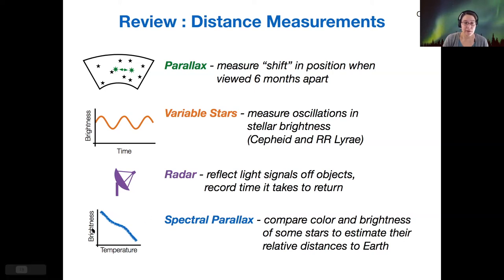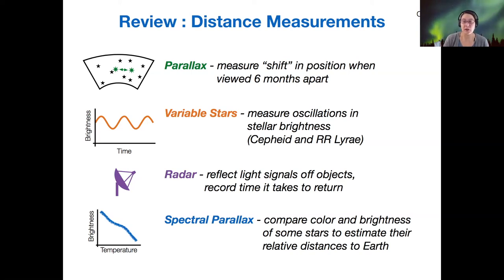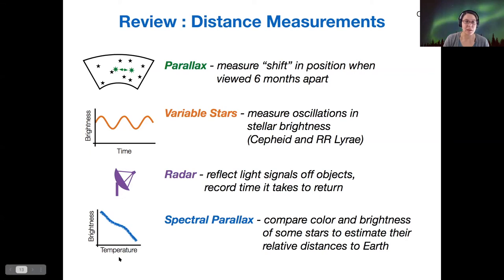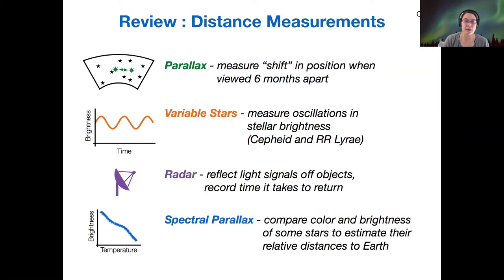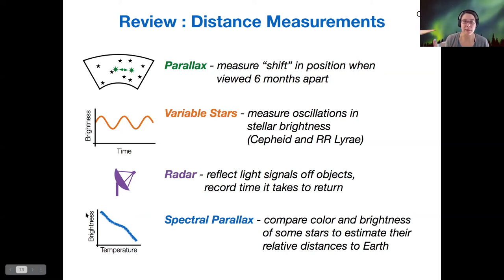There's also a method called spectral parallax, or spectroscopic parallax, where you use the color and brightness of a star to estimate its relative distance to Earth. For the variable star method and the spectral parallax method, we need to measure the apparent brightness and then use some other method to get the absolute magnitude in order to calculate a distance. Parallax does not require that, but those other two do.